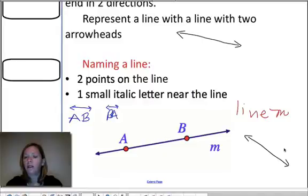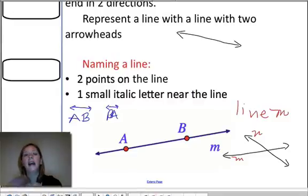This is great for when you have several lines that you're drawing. Maybe I have one here. Maybe I have one here. It's just a real quick and easy way to name each of your lines. So maybe I call this line M and that line N. And I don't have to put points on the line and I can easily name it.